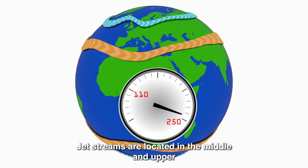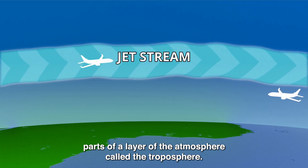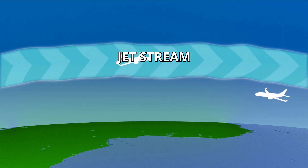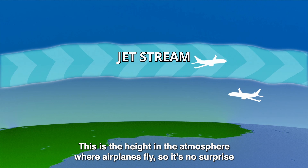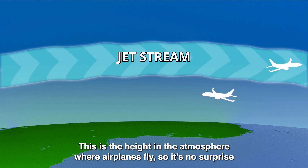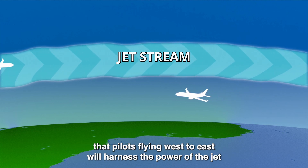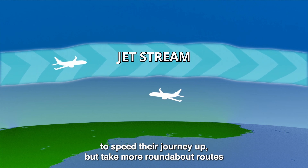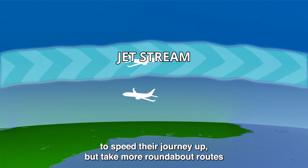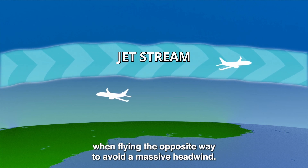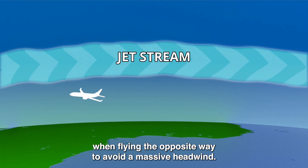Jet streams are located in the middle and upper parts of a layer of the atmosphere called the troposphere. This is the height in the atmosphere where airplanes fly, so it's no surprise that pilots flying west to east will harness the power of the jets to speed their journey up, but take more roundabout routes when flying the opposite way to avoid a massive headwind.